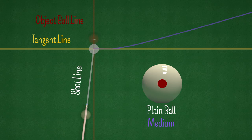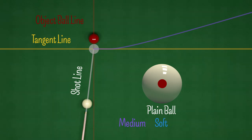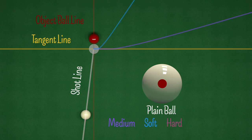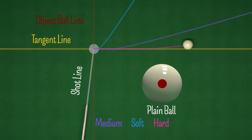How quickly the cue ball moves forward from the tangent line depends on how hard we hit the shot. If we hit the cue ball softly, it makes impact and then almost immediately moves forward from the tangent line. However, if we hit the shot harder, after impact the cue ball travels further along the tangent line before it slows enough for the spin to take hold and draw the ball away from the tangent line.